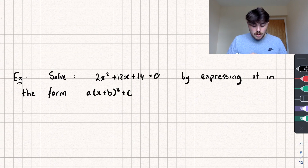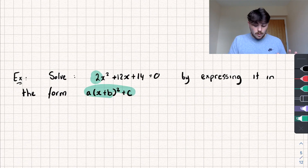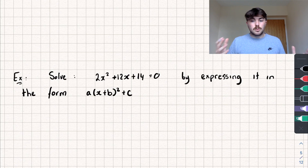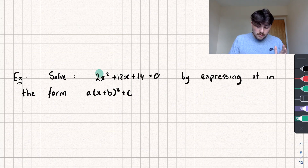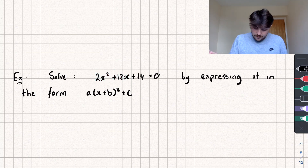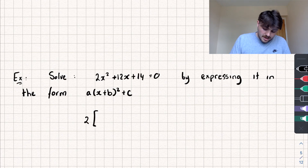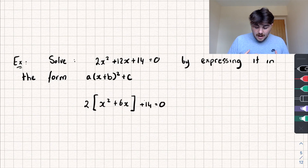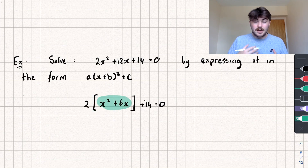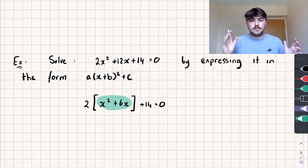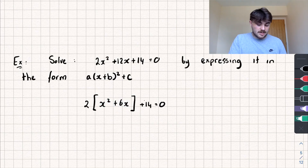The final example is to solve 2x squared plus 12x plus 14 equals 0 by expressing it in completed square form. Because the coefficient of x squared is not equal to 1, we need an additional step: we want to make the coefficient of x squared equal to 1 by factorizing out the 2 from the first two terms only. That gives us 2 times the square bracket x squared plus 6x, plus 14 equals 0. Square brackets are used here because we'll be adding more brackets inside shortly.